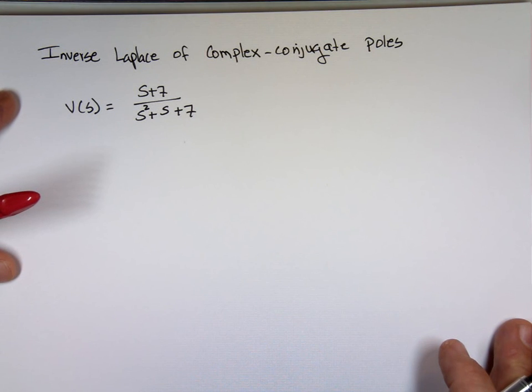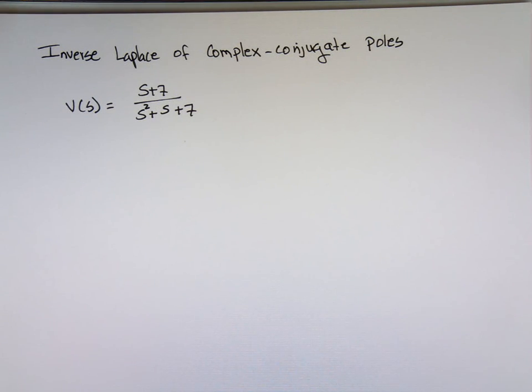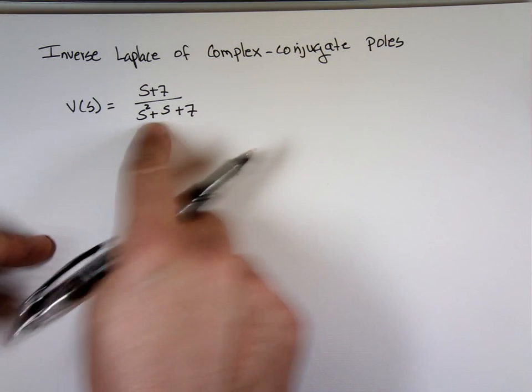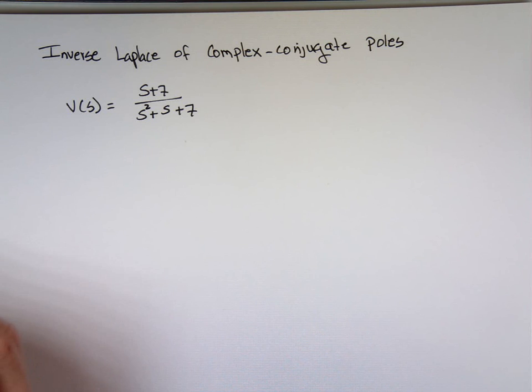So, let's look at inverse Laplace of complex conjugate poles. If you take this example, S plus 7 over S squared plus S plus 7. If you factor the bottom, try to find what the roots are, what the poles are, what makes the bottom zero. That's basically what I'm looking for.